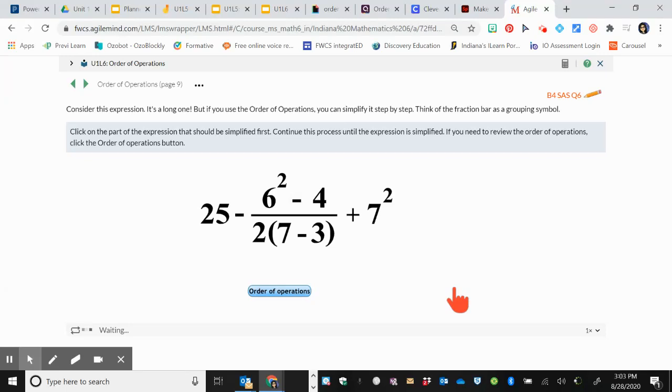Consider this expression. It's a long one, but if you use the order of operations, you can simplify it step by step. Think of the fraction bar as a grouping symbol. Click on the part of the expression that should be simplified first. Continue this process until the expression is simplified. If you need to review the order of operations, click the order of operations button.